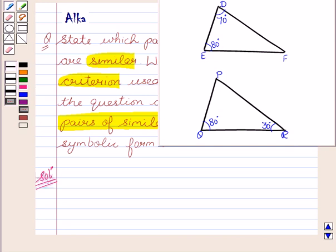Now let's start with the solution. First of all, we will consider triangle DEF. In triangle DEF, we will apply the angle sum property. That is, the sum of the angles of the triangle is equal to 180 degrees.